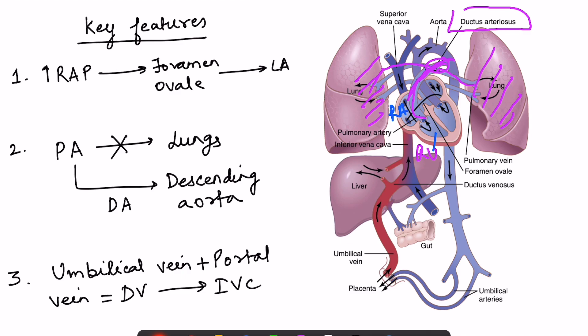Second, because of increased pulmonary vascular resistance and decreased systemic vascular resistance, right atrial pressure is more than left atrial pressure. So there is a patent foramen ovale present between the right atrium and left atrium. You can see here that the right atrium and left atrium are connected by the foramen ovale, so blood also flows from the right atrium to the left atrium. So right atrial pressure being more drives this flow.